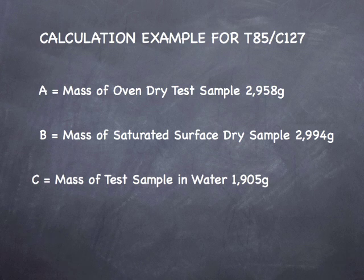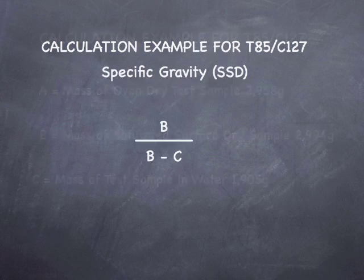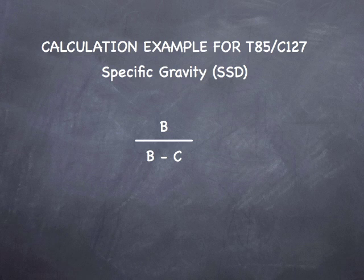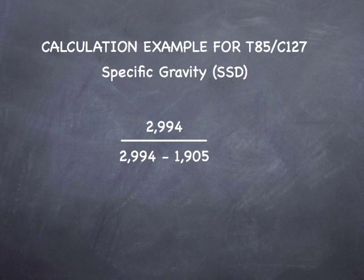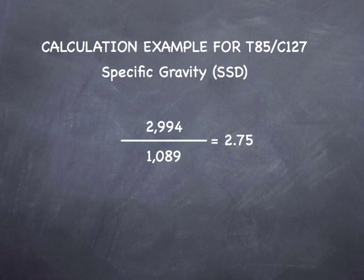For our example, the weight of our oven dry specimen is 2,958 grams, the weight of our SSD specimen in air is 2,994 grams, and the weight of our submerged sample is 1,905 grams. The calculation for bulk specific gravity in the SSD condition is B divided by B minus C: 2,994 grams divided by (2,994 minus 1,905) grams, which equals 2,994 divided by 1,089, giving us a bulk specific gravity SSD of 2.75.